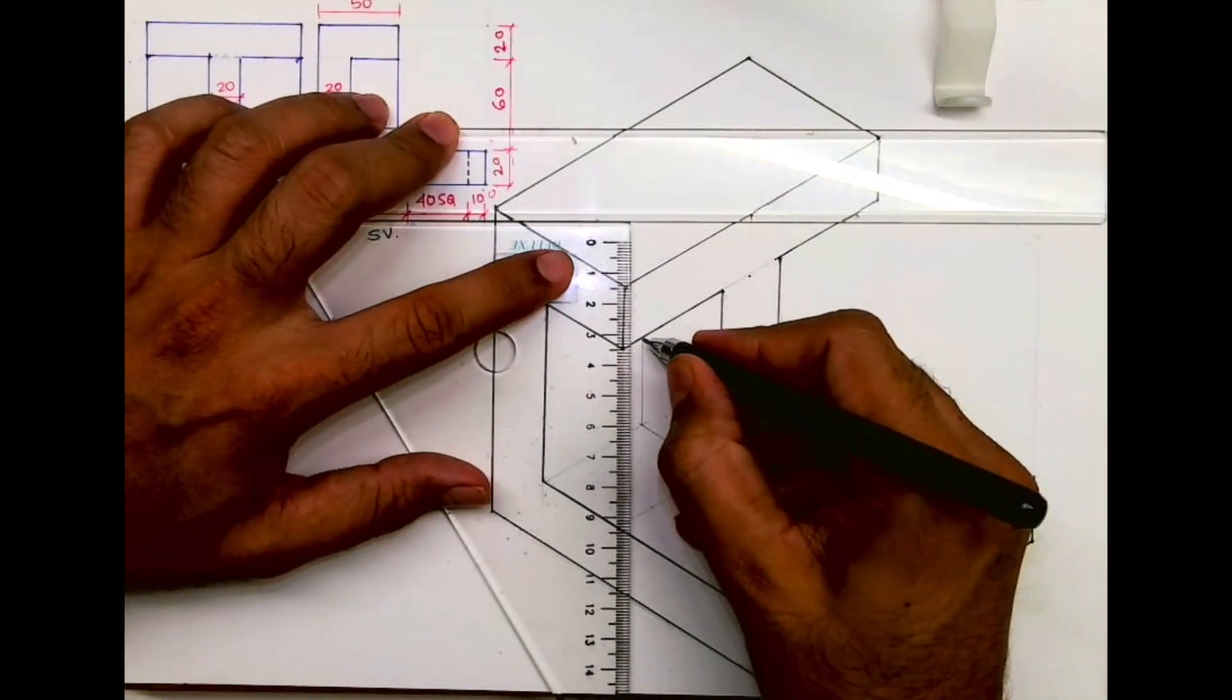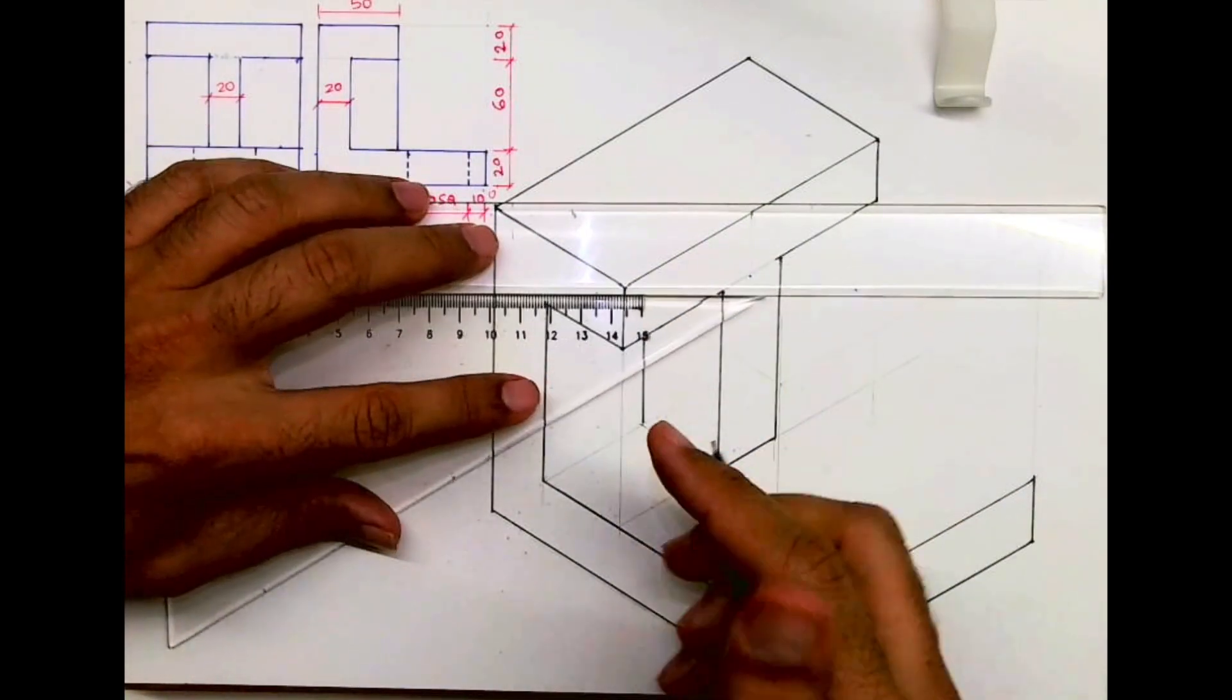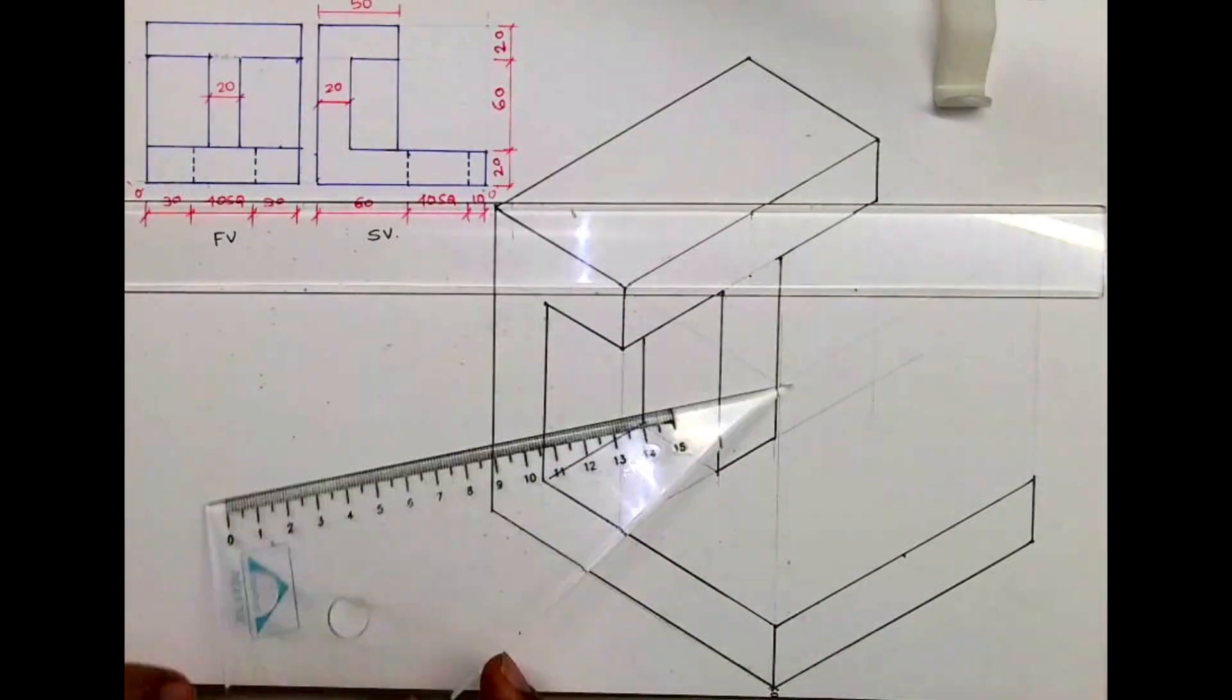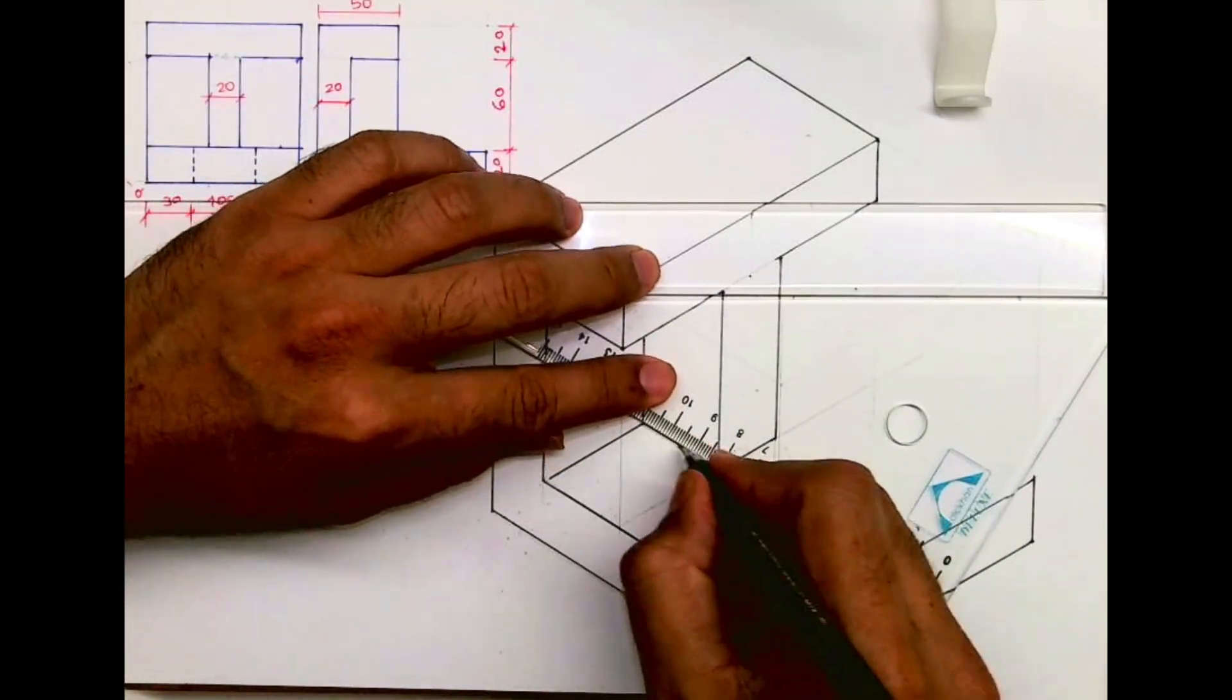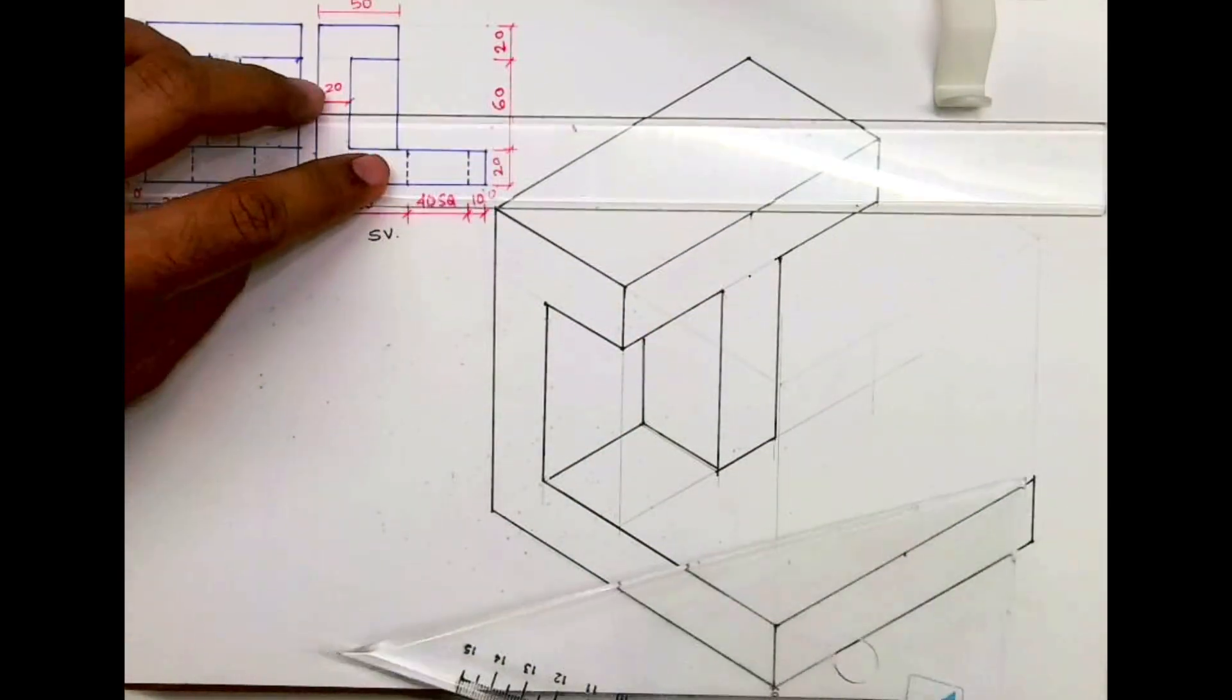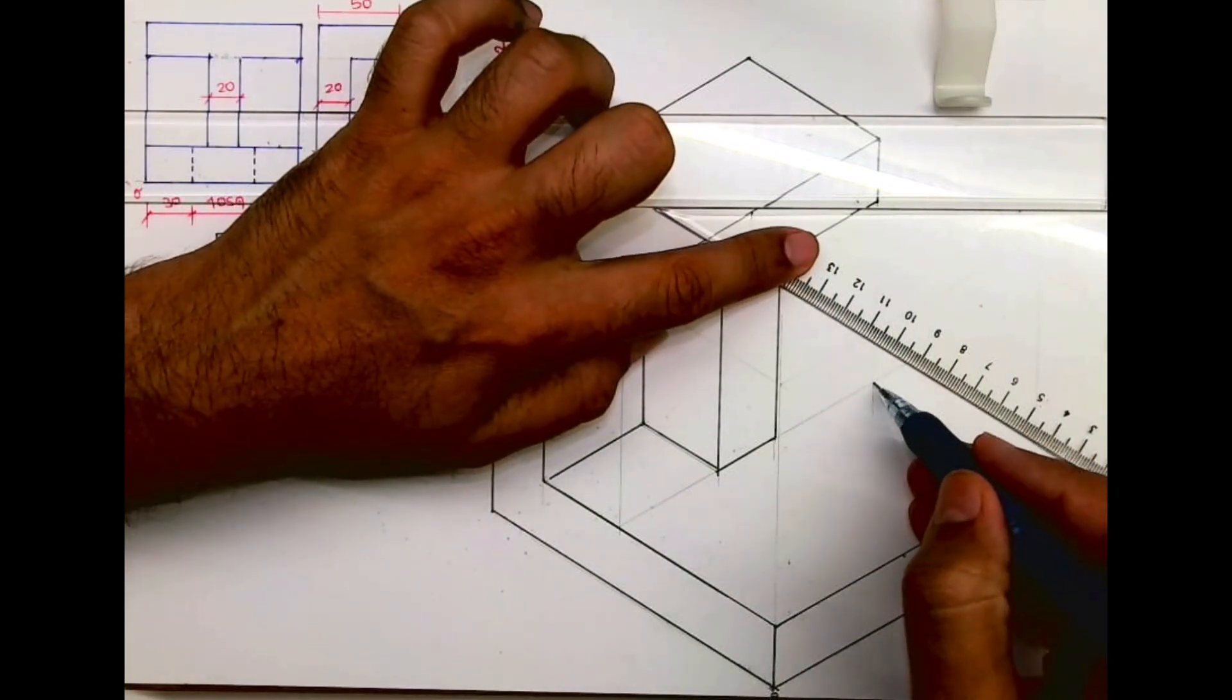So we will get this part. If you see, we got two rectangles, this rectangle and this rectangle. The same rectangle will be on the other side also, so what I will do, I will extend this line.